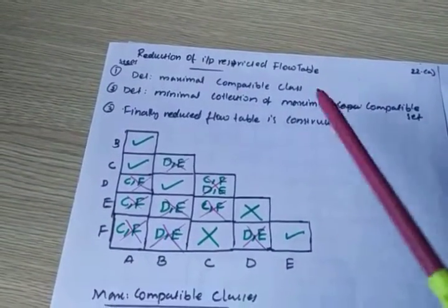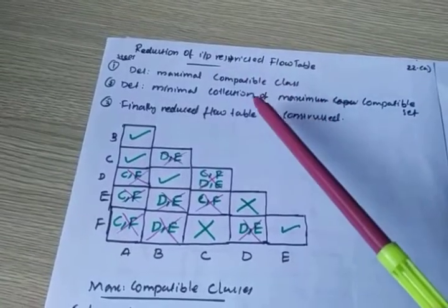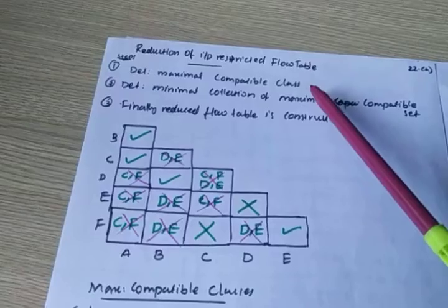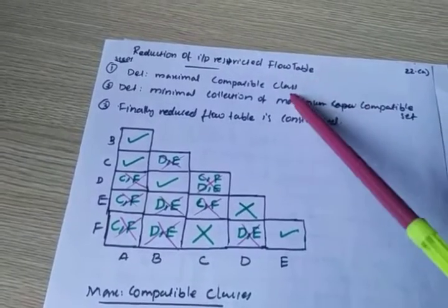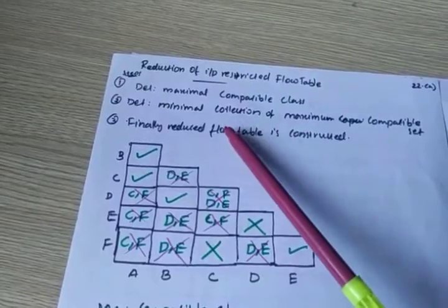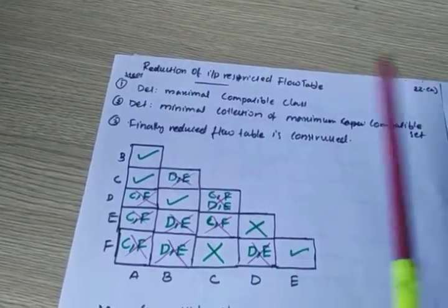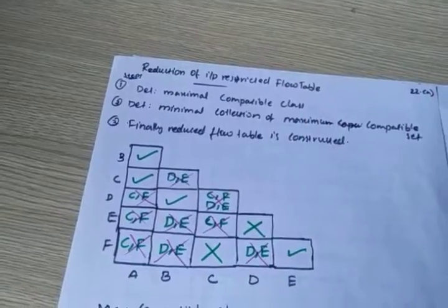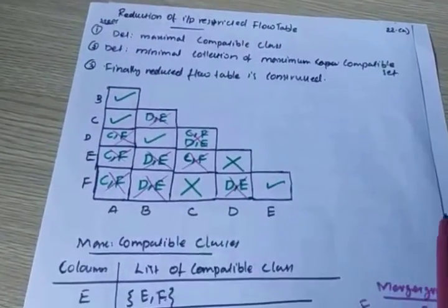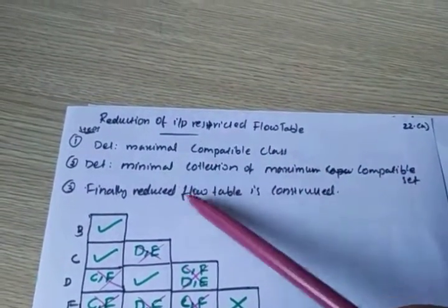To do this reduction of the input restricted flow table, you have to follow three steps. First, determine the maximum compatible classes. Second, determine the minimum collection of maximum compatible sets. Third, the reduced flow table is constructed.